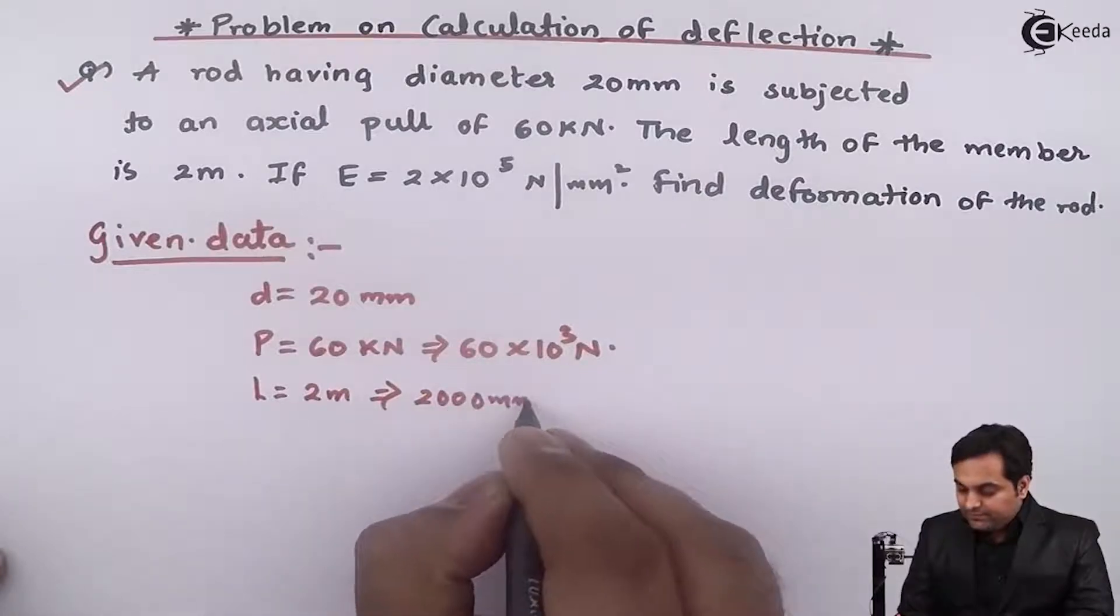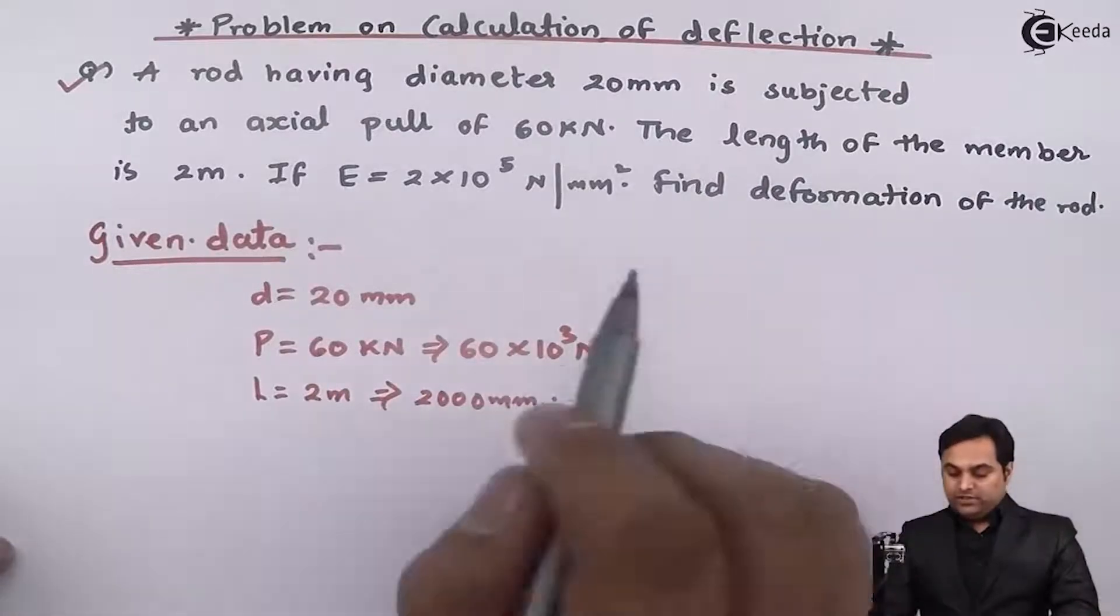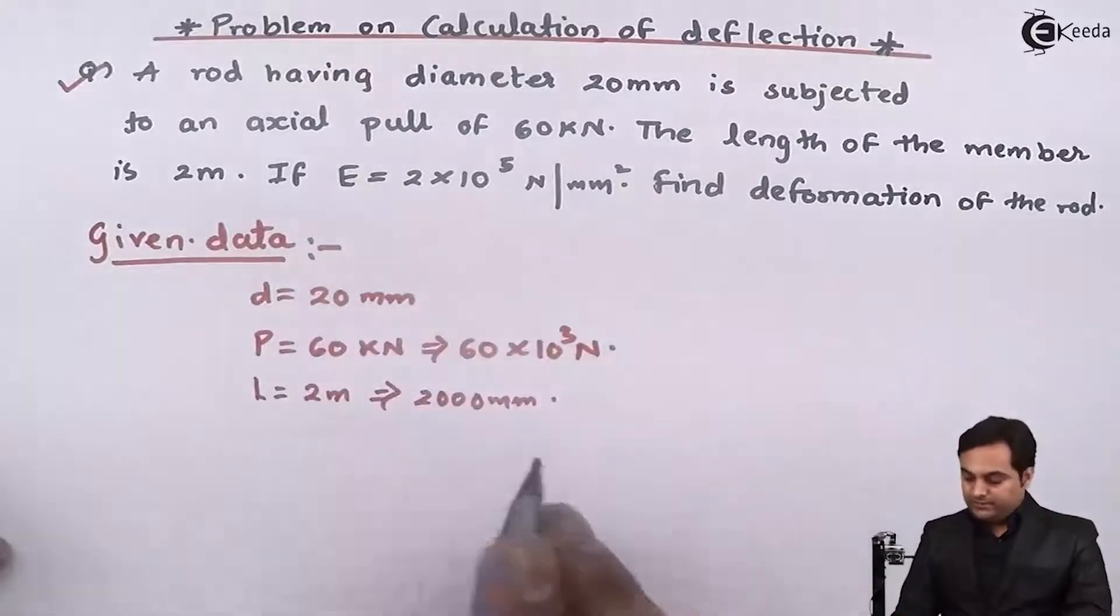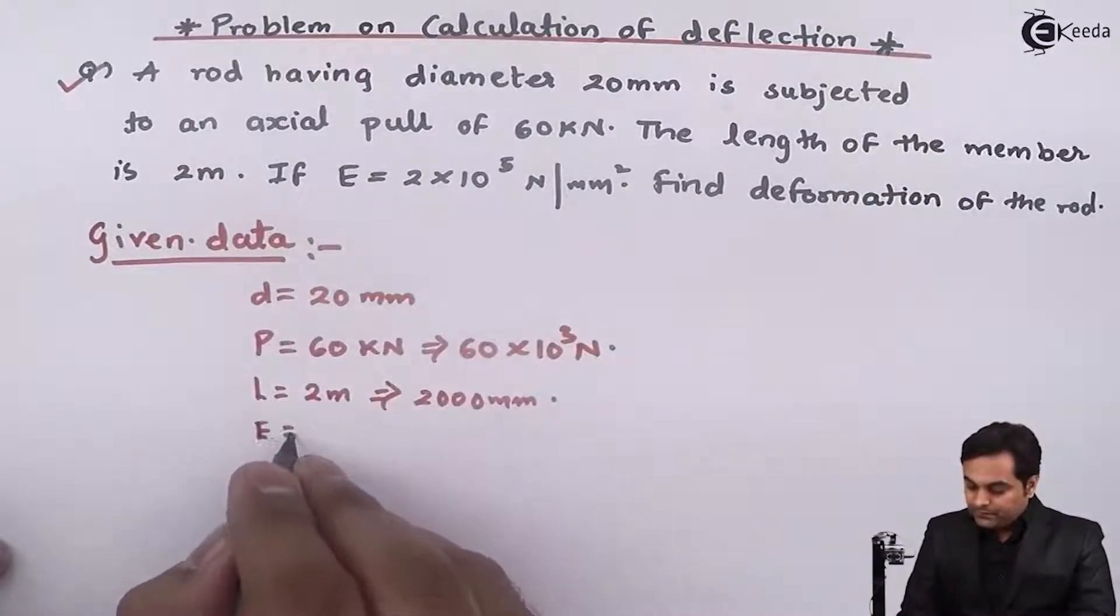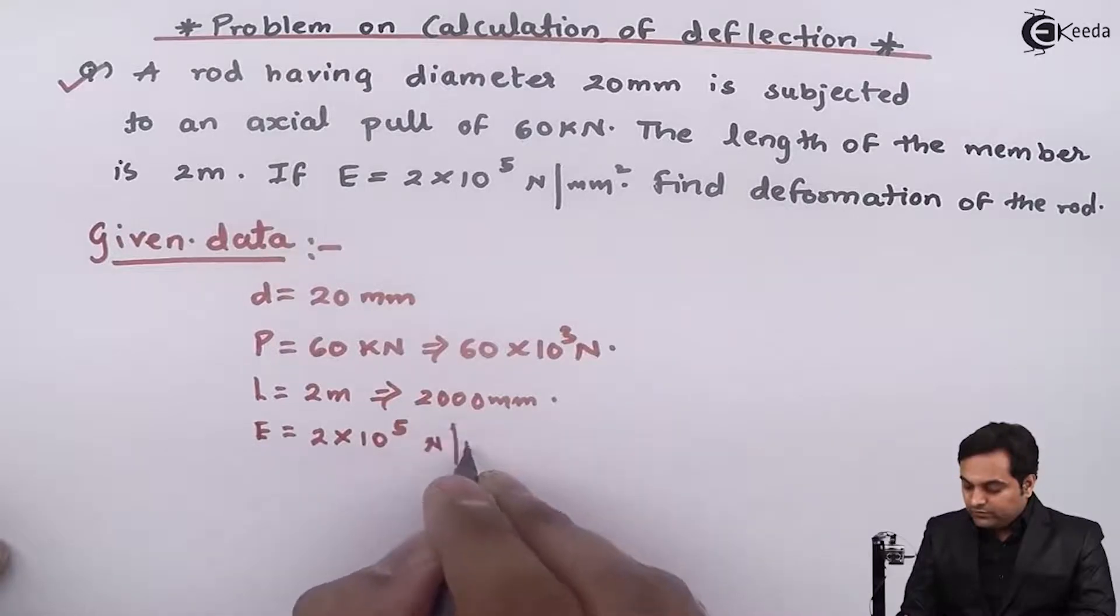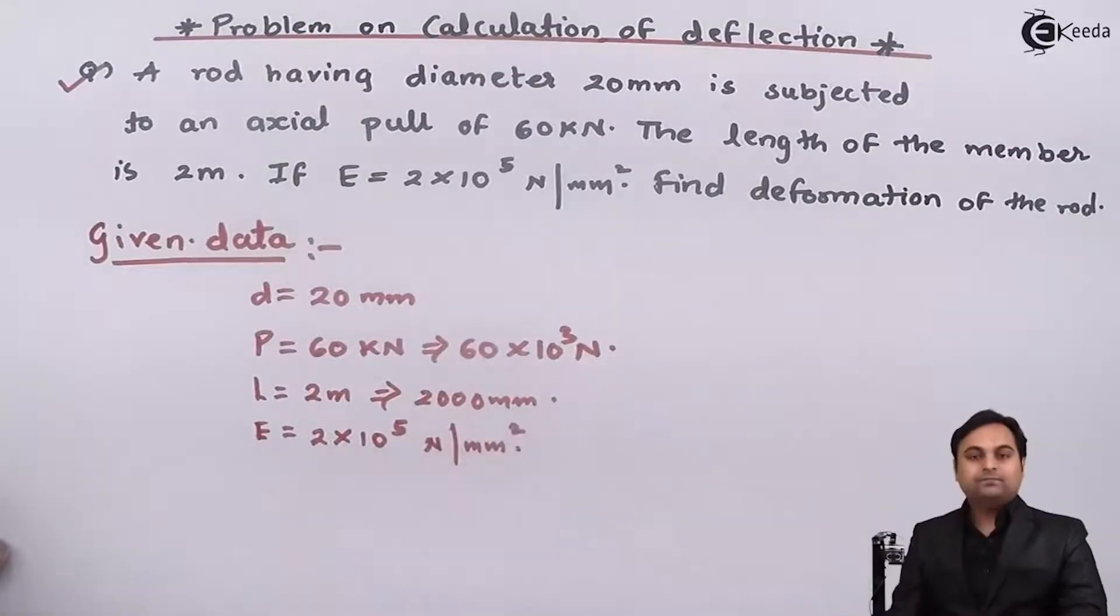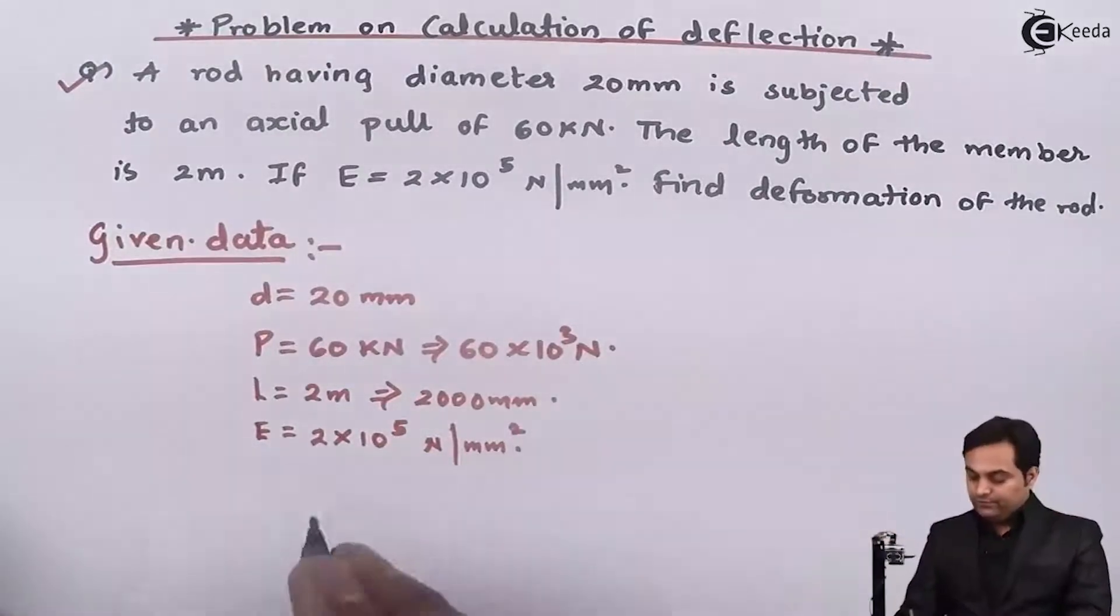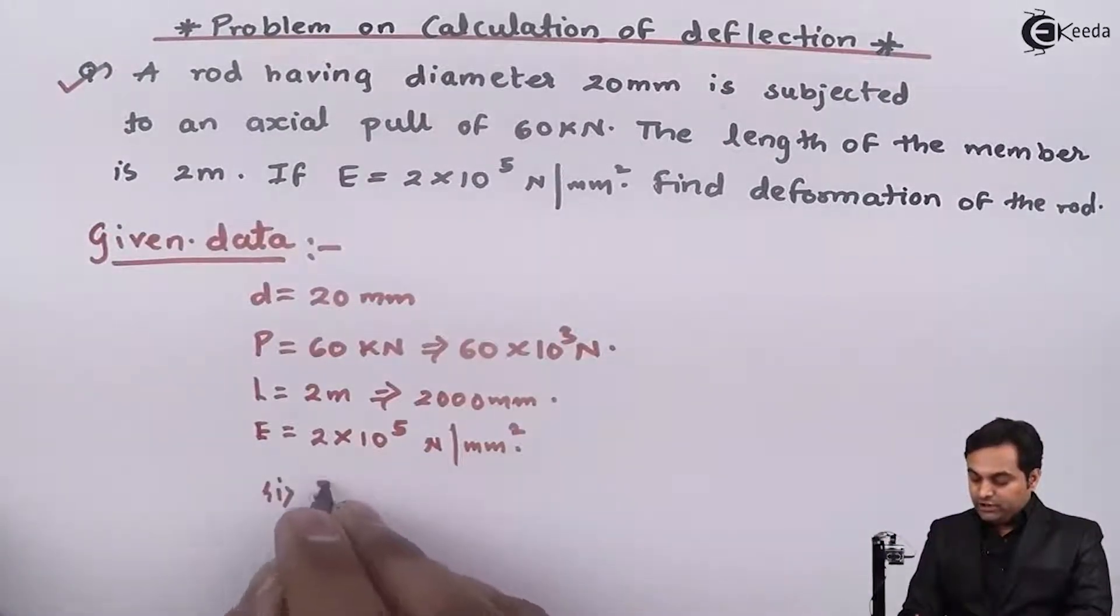So it is 2000 mm. If capital E, Young's modulus, is 2 into 10 raise to 5 Newton per mm square, find the deformation of the rod. We have to find out how much is the deformation, that is deflection.